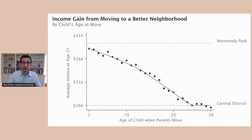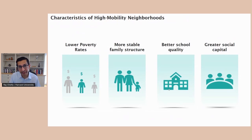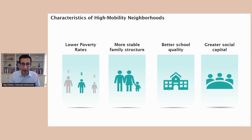What this shows us is that differences in local childhood environment at a very narrow geography can really shape kids' prospects for upward mobility in a profound way. The next question on your mind is: what is it that is different about the childhood environment in a place like Normandy Park relative to the Central District that is leading to these differences in kids' outcomes? That's a very challenging question to answer, and it brings us to the frontier of where this body of research is and what our research group is currently working on. I'm going to summarize what we've found to be some of the main characteristics of high-mobility neighborhoods in the United States, and I suspect similar patterns would be true in India and elsewhere.